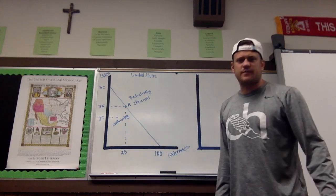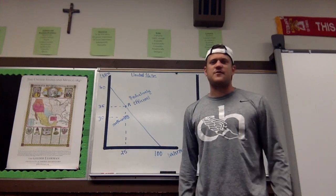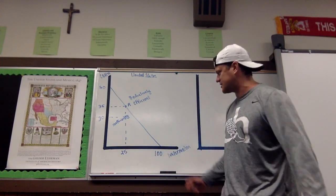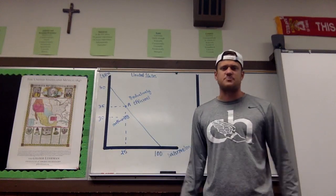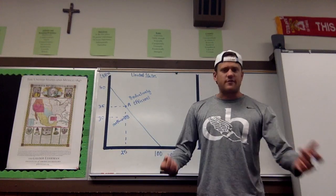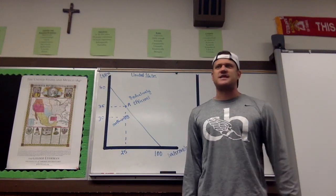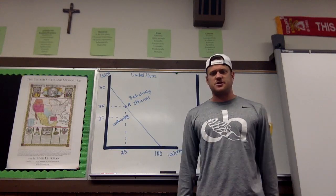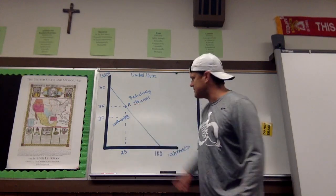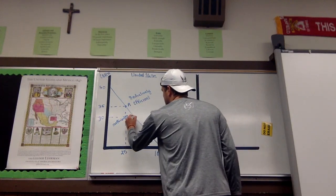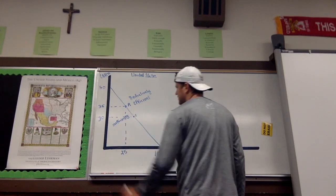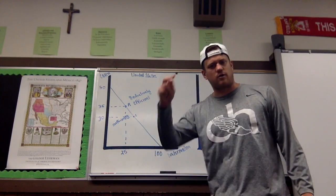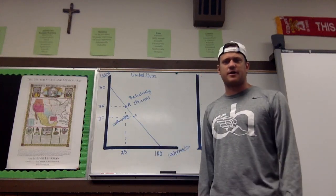Not only are points along the curve efficient, they are productively efficient. What we mean by productively efficient is that they're using all of their resources to the best of their ability to make as much of both products as possible. There is another type of efficiency — allocative efficiency — that we'll get to in unit two. At point A and even at point C, we are productively efficient because we are producing along the production possibility curve.